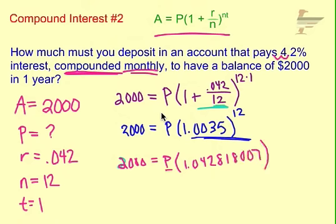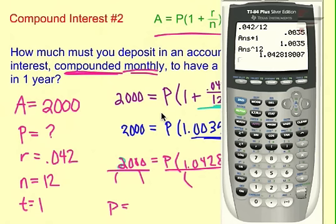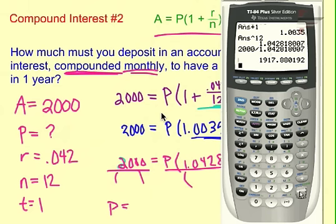And then to solve for P, we want to divide both sides by that long decimal. I'm not going to go ahead and rewrite it out, but I will do that on the calculator. We're going to take 2,000, divide it by that number, 1.042818007, equals 1917.88.